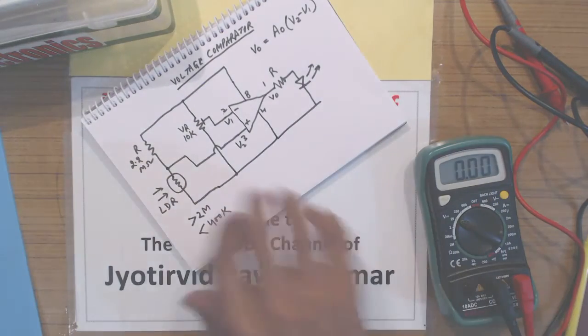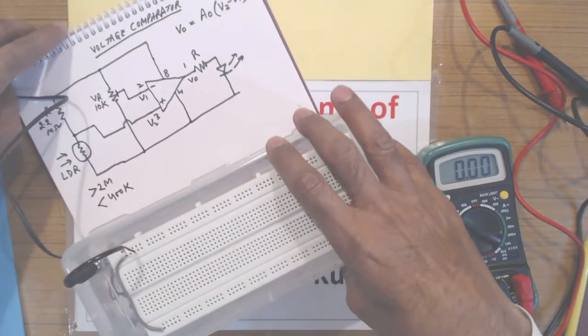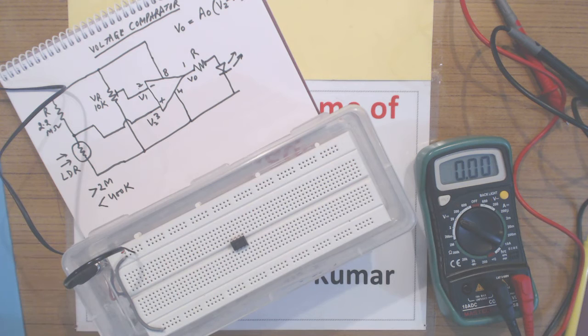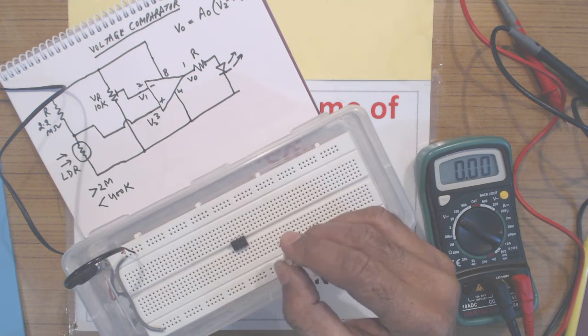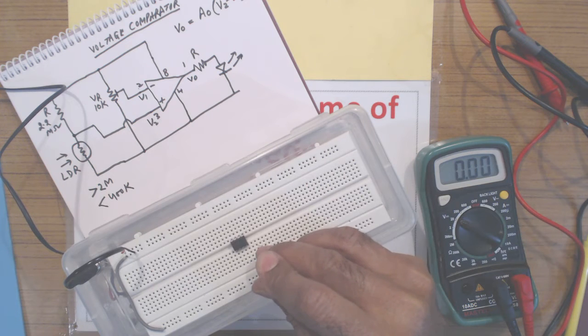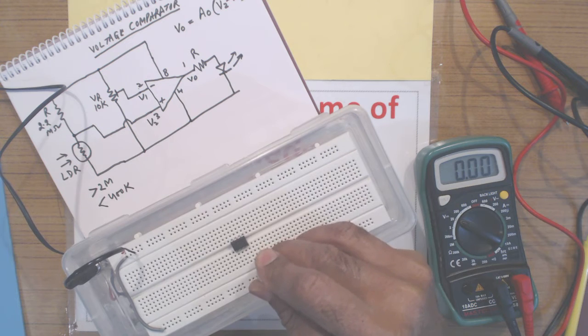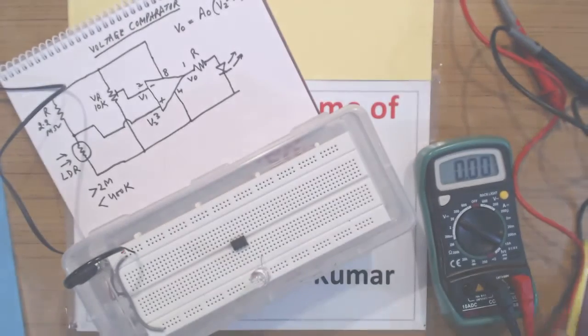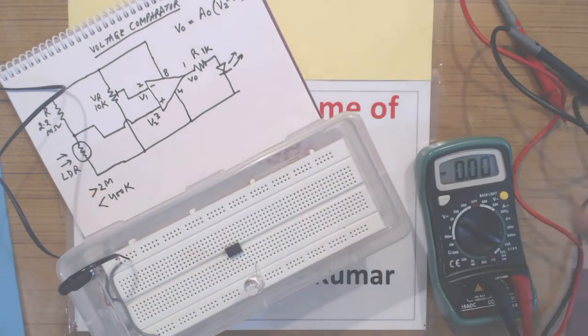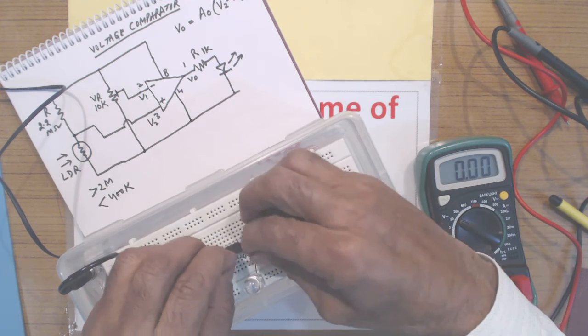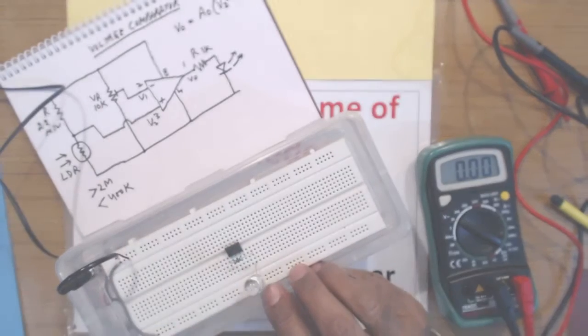So let us now connect the components. This is the IC I am going to insert somewhere here on the breadboard, and this is the LED. I will be connecting the anode through a resistance. The resistor R is 1K, so from pin number 1 I am connecting this resistor at the anode of the LED. The cathode of the LED goes to ground.